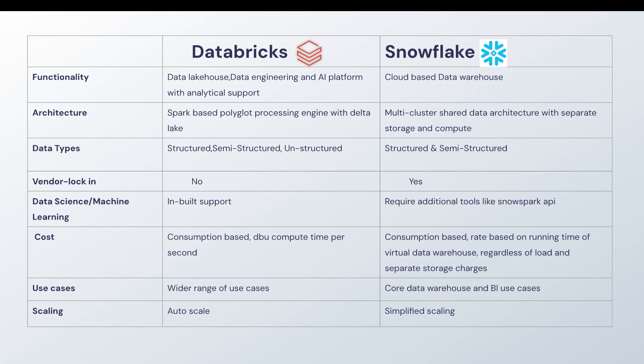So even from an architecture standpoint, Databricks and Snowflake are completely different. Databricks is a data lakehouse that uses the concept of Delta Lake, whereas Snowflake is a multi-cluster data architecture with separate storage and separate compute.